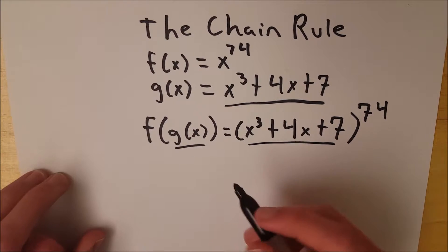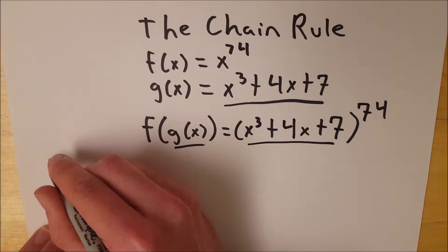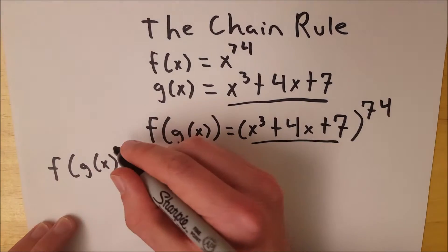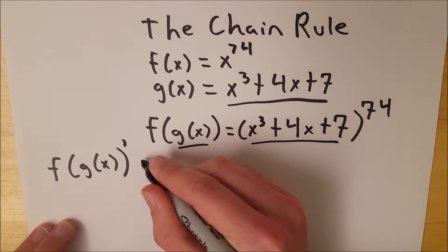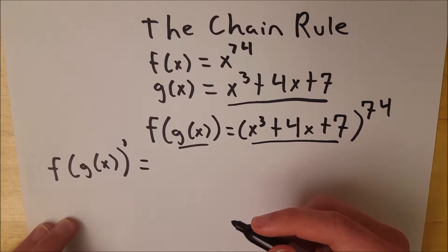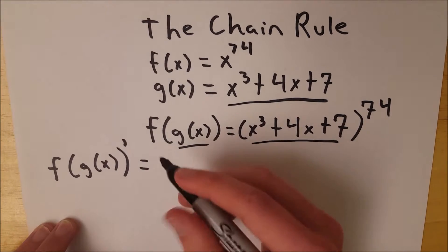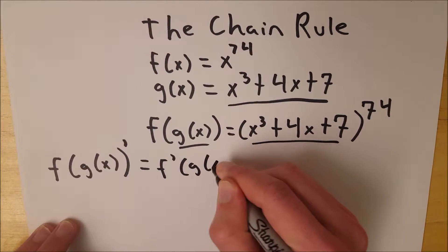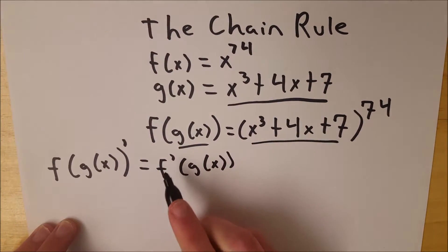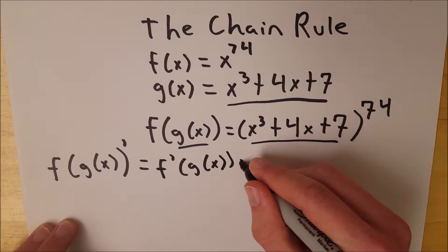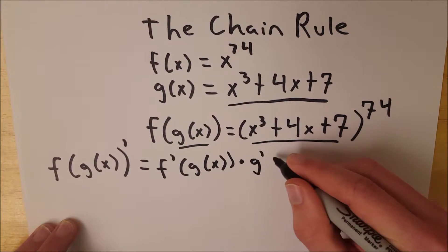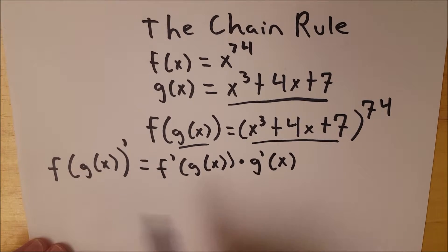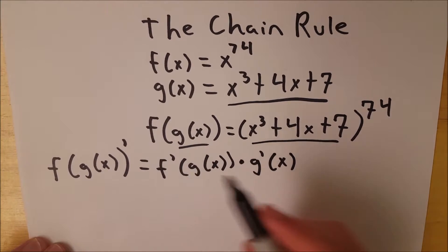So the formula for the chain rule, if we want to find the derivative of f of g of x, this is equal to the derivative of the outside function, so it's f prime of g of x, taking the derivative of the outside function and leaving the inside function the same, and then multiplying that by the derivative of the inside function, so that's g prime of x. Now let's use this formula to find the derivative of our f of g of x.